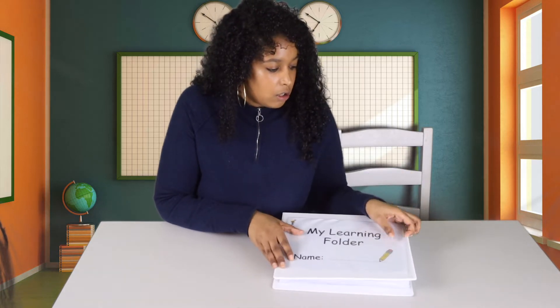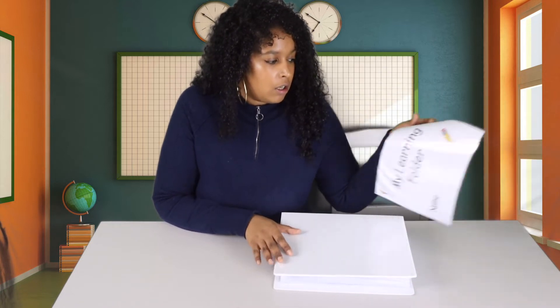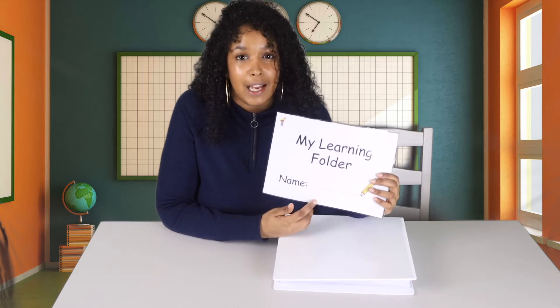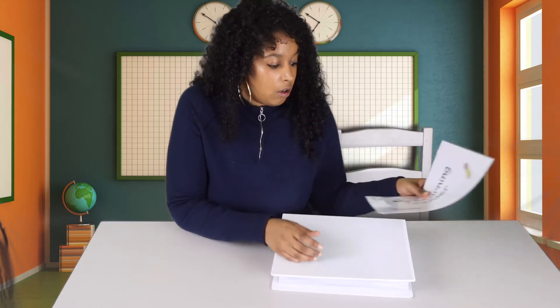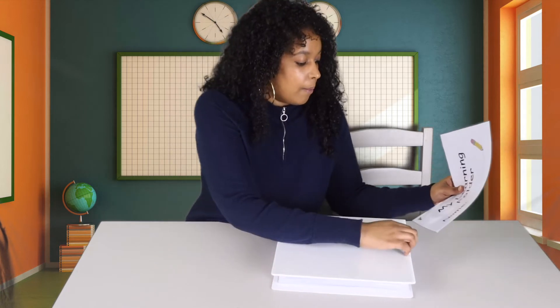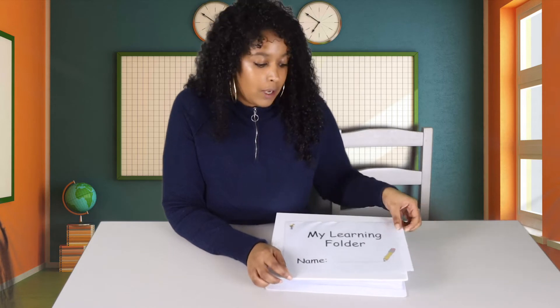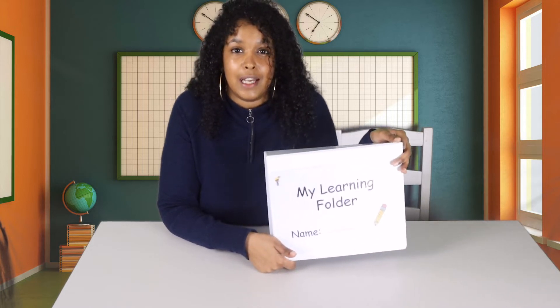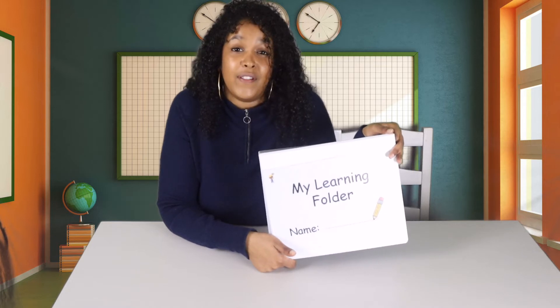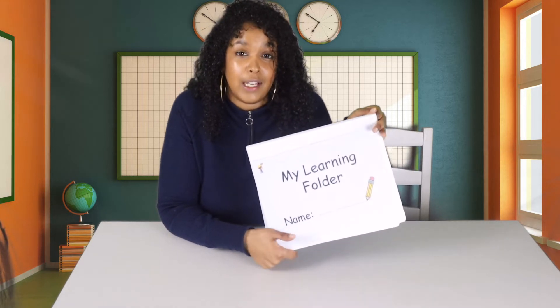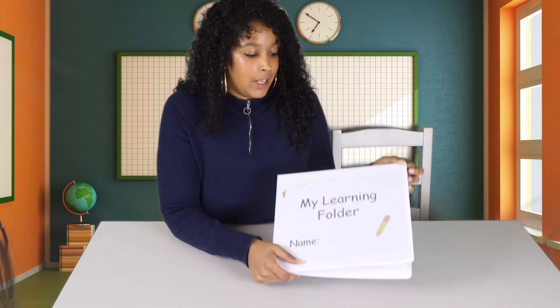If you would like a tutorial on how I make the worksheets, then leave a comment below and I will get that sorted ASAP. Okay, so learning folder. The first page, well the outside, is laminated as well. So Amari's currently learning how to write his name. It's a good opportunity for him to practice. We've only just completed this folder today, so he hasn't had much use of it yet.